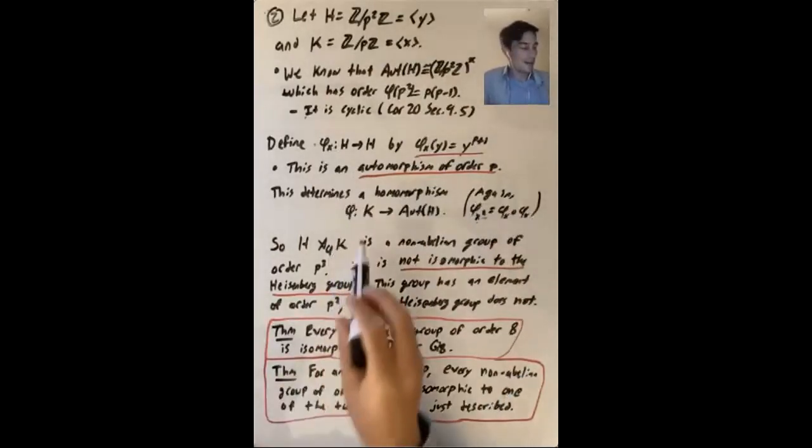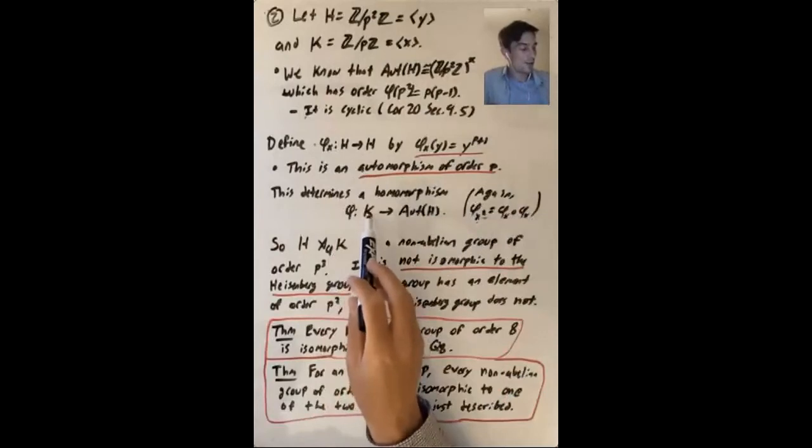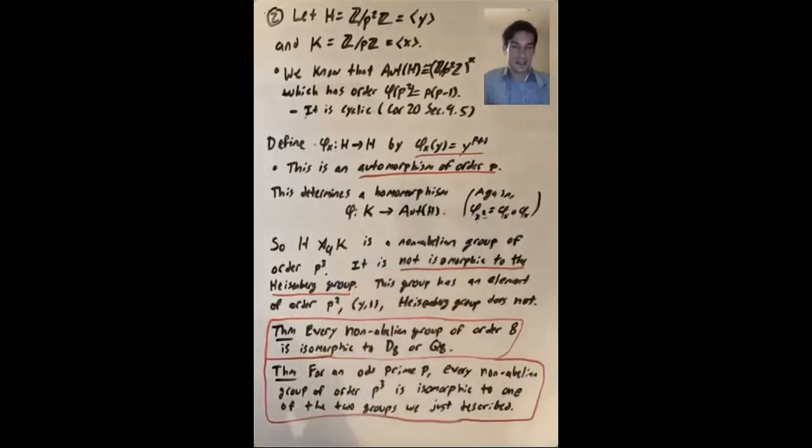All right, so now we have a non-trivial homomorphism from K to aut H. So this semi-direct product of H and K with respect to phi is a non-abelian group of order p cubed.